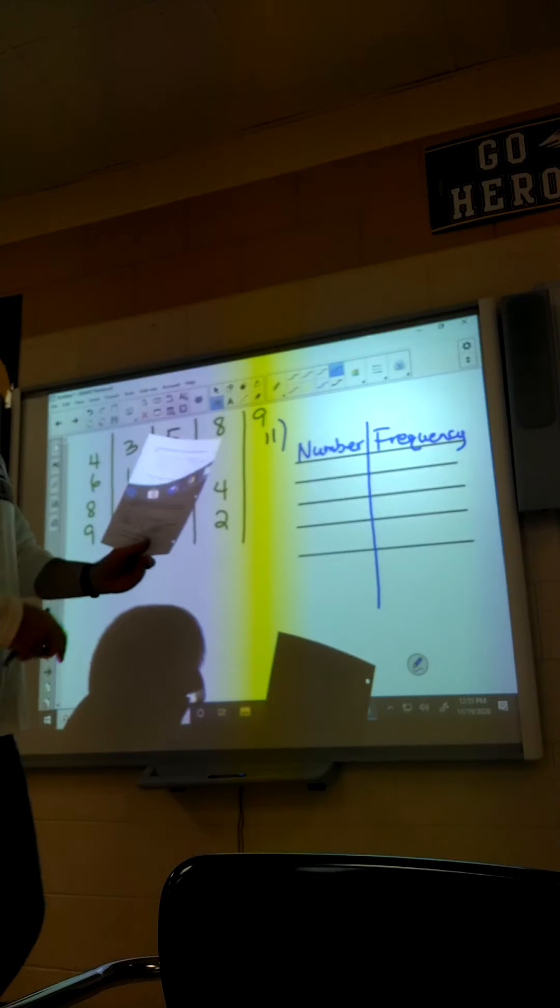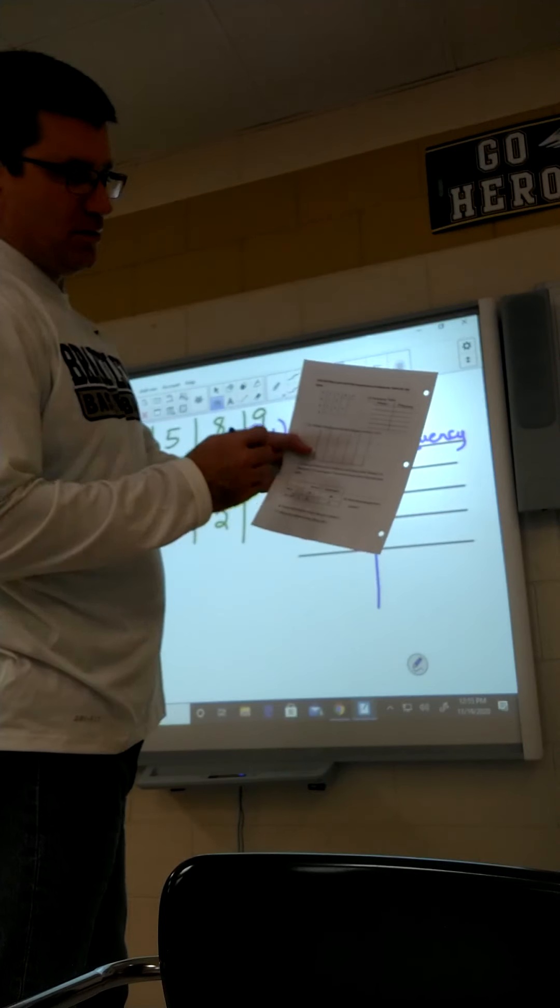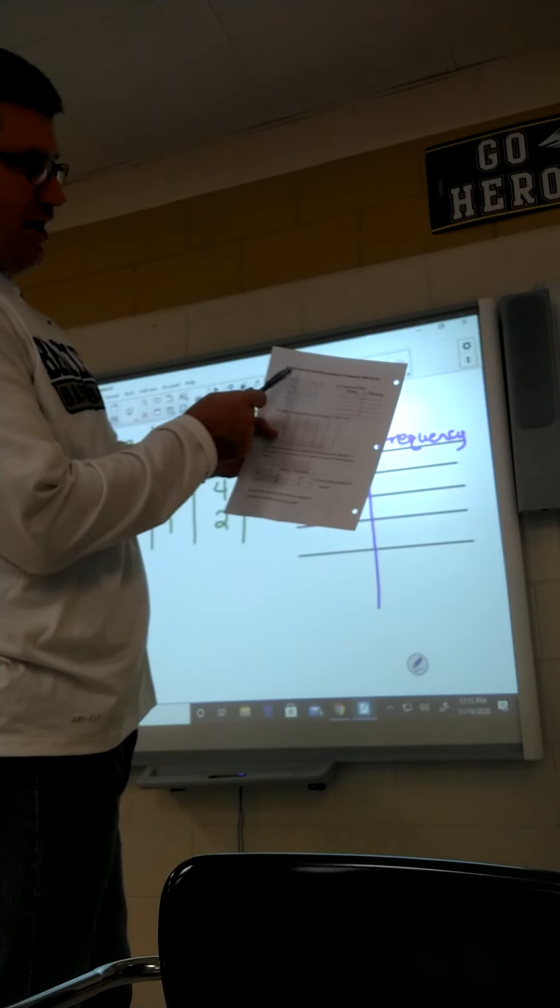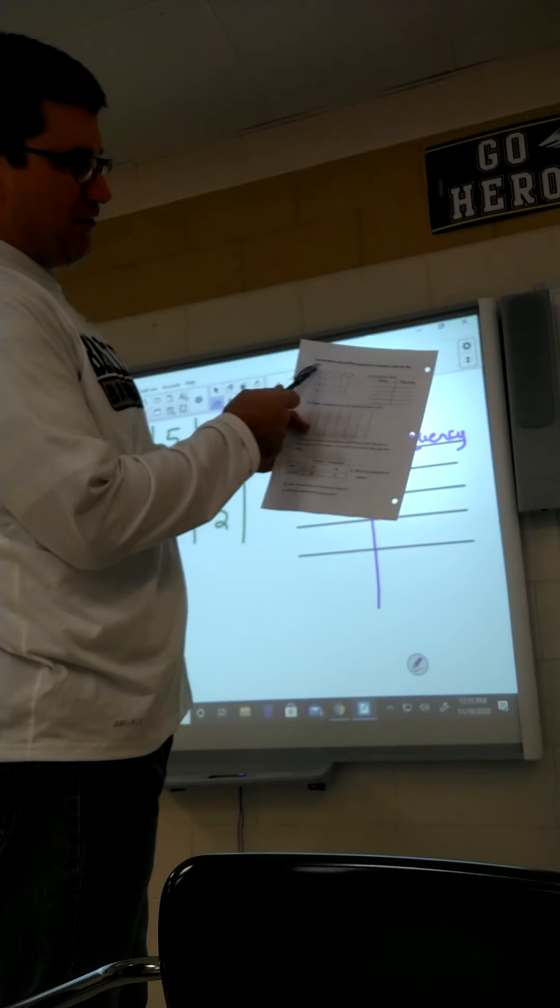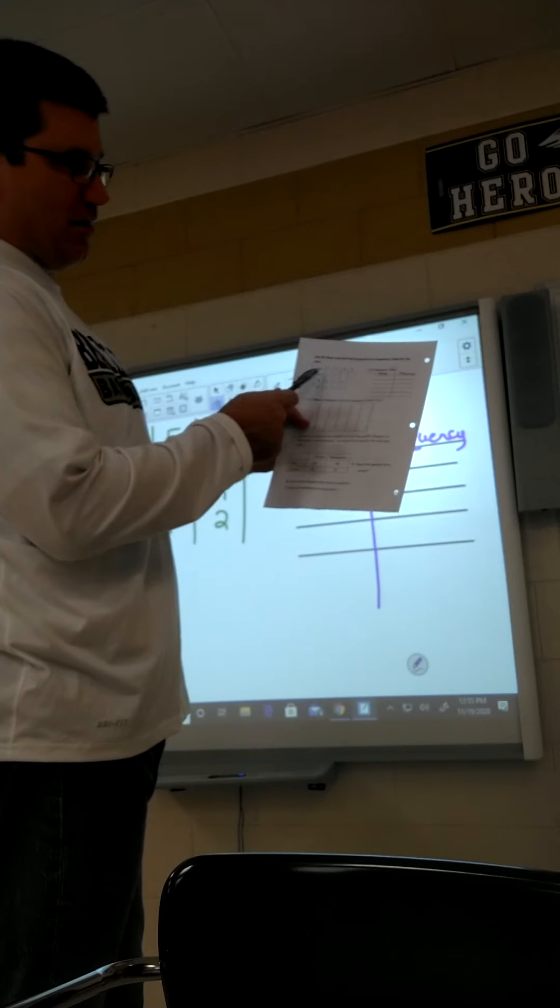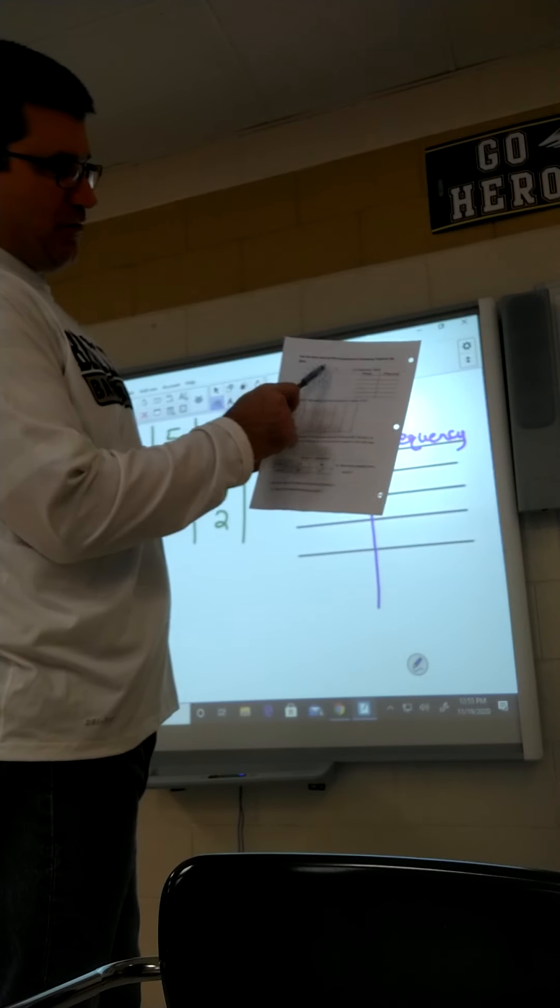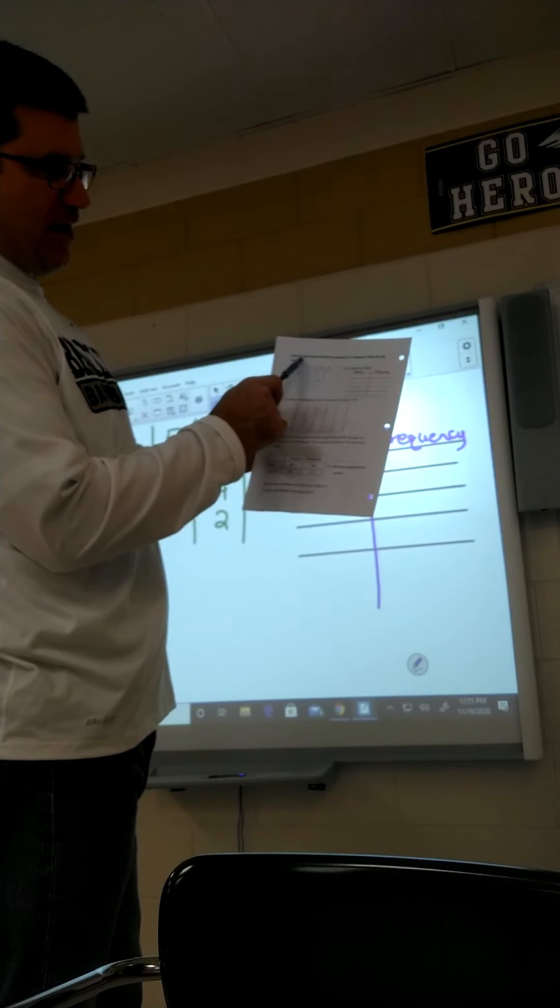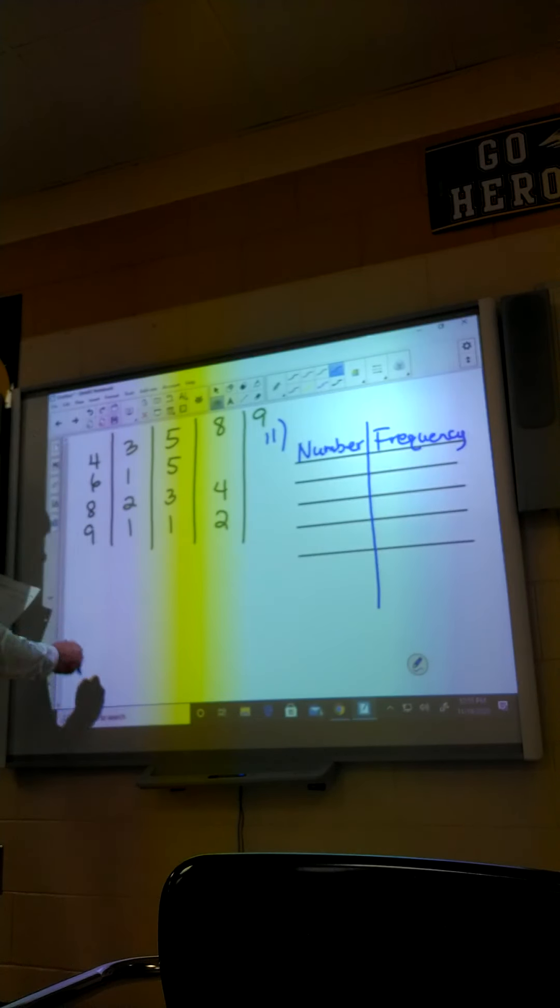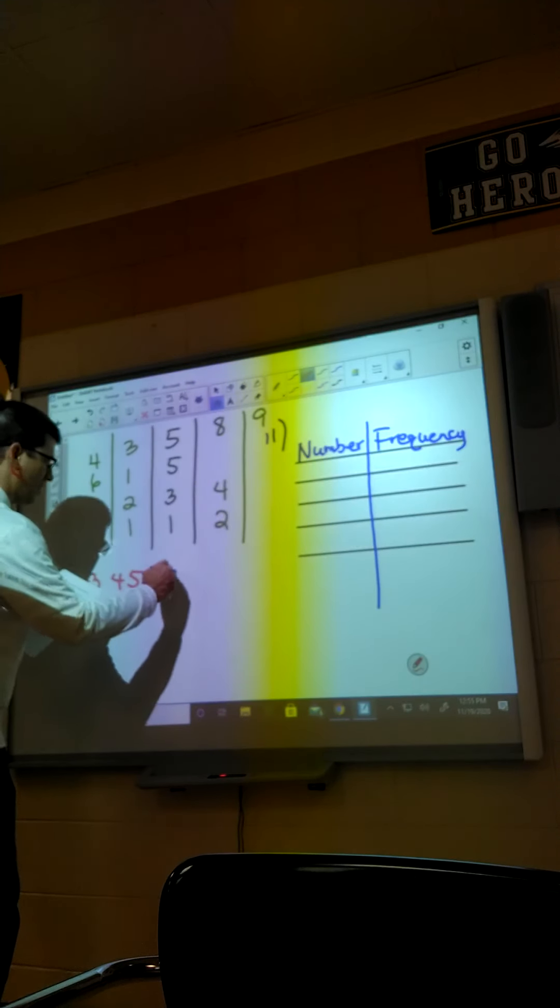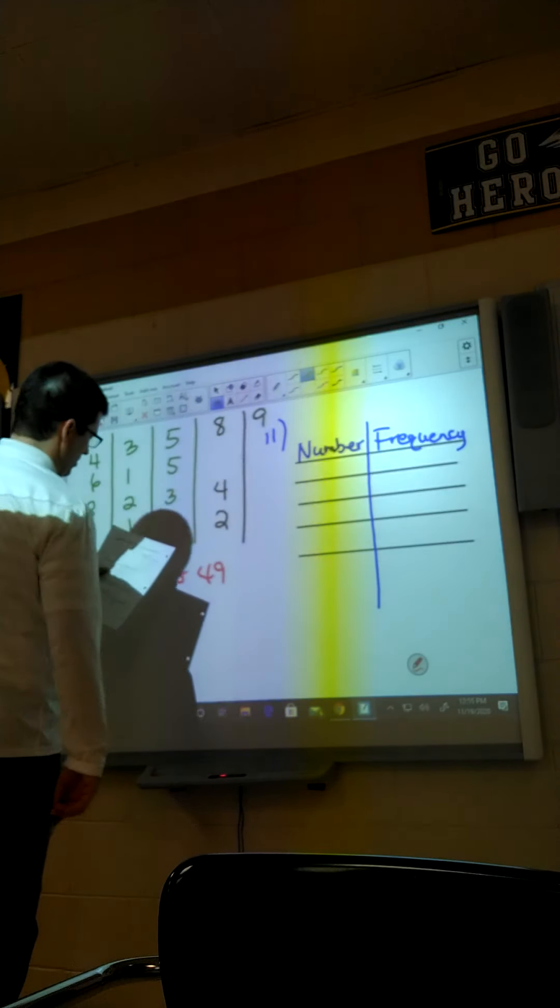All right, looking at number 11. When you see something that looks like this, you've got columns. This is a stem and leaf plot. The first number in the first column is your stem. So for example, the four numbers here would be 43, 45, 48, and 49. We'll write them down: 43, 45, 48, and 49.